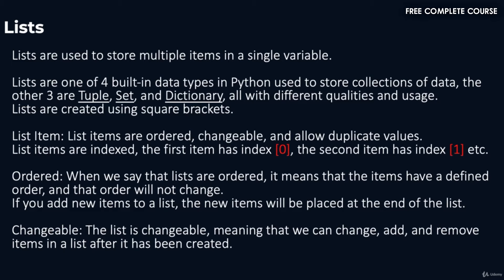List items are ordered, changeable, and allow duplicate values. List items are indexed — the first item has index zero, the second item has index one, etc. When we say lists are ordered, it means that the items have a defined order and that order will not change. If you add new items to a list, the new items will be placed at the end of the list. The list is changeable, meaning that we can change, add, and remove items in a list after it has been created.